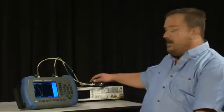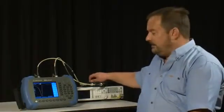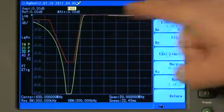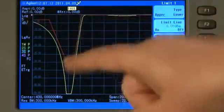Here I am measuring the same duplexer or diplexer filter that we measured previously, but I have created some limit lines. You can see here I have created a limit line around the pass band and the notch of this filter.